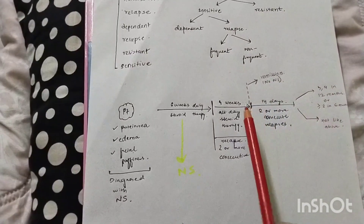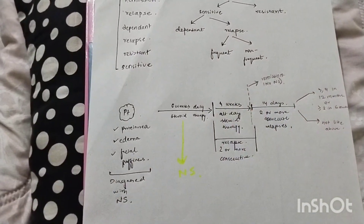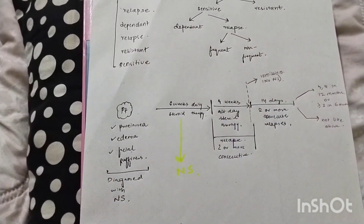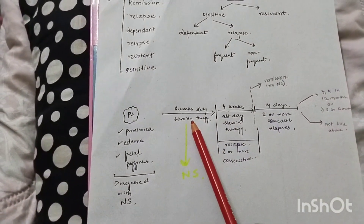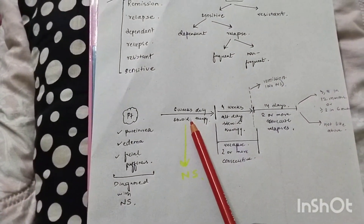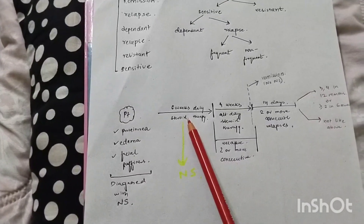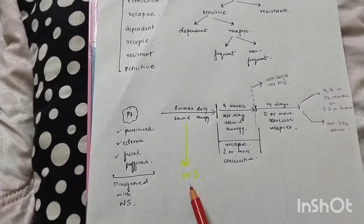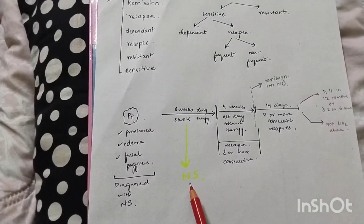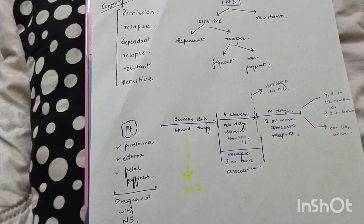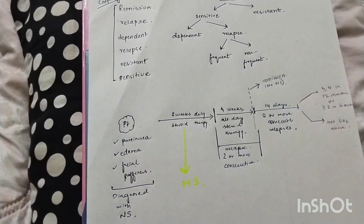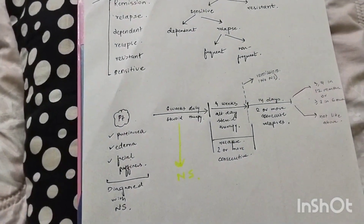What is the second possibility? That the disease is not even responding. Steroid therapy is being given at high doses, but the patient is not responding. This is steroid resistant nephrotic syndrome — after giving steroids, the patient is not responding at all.